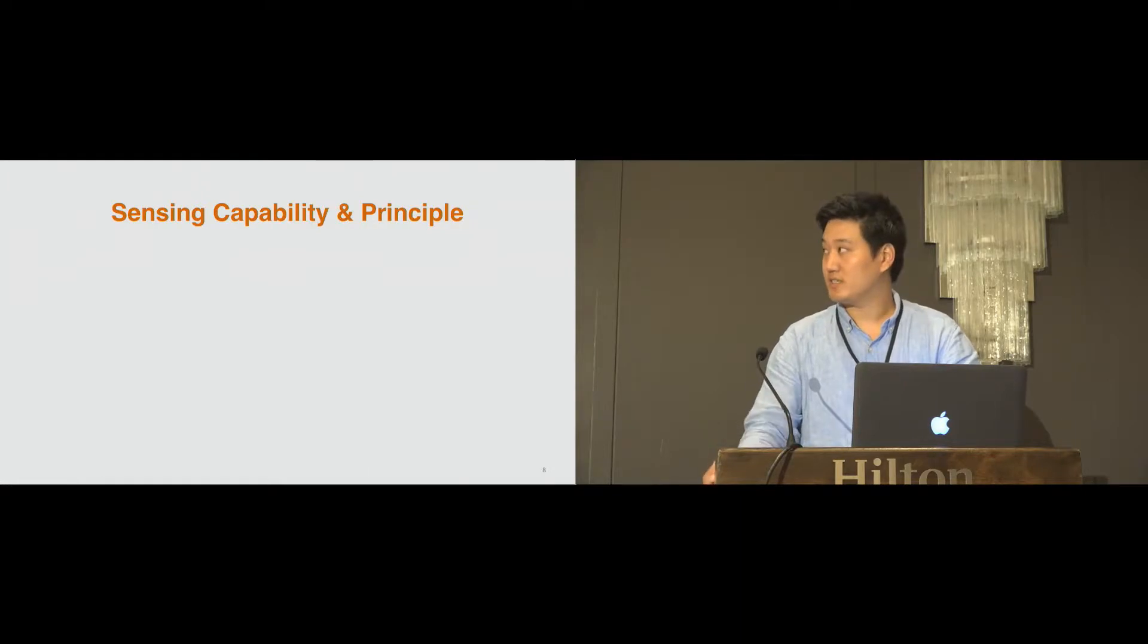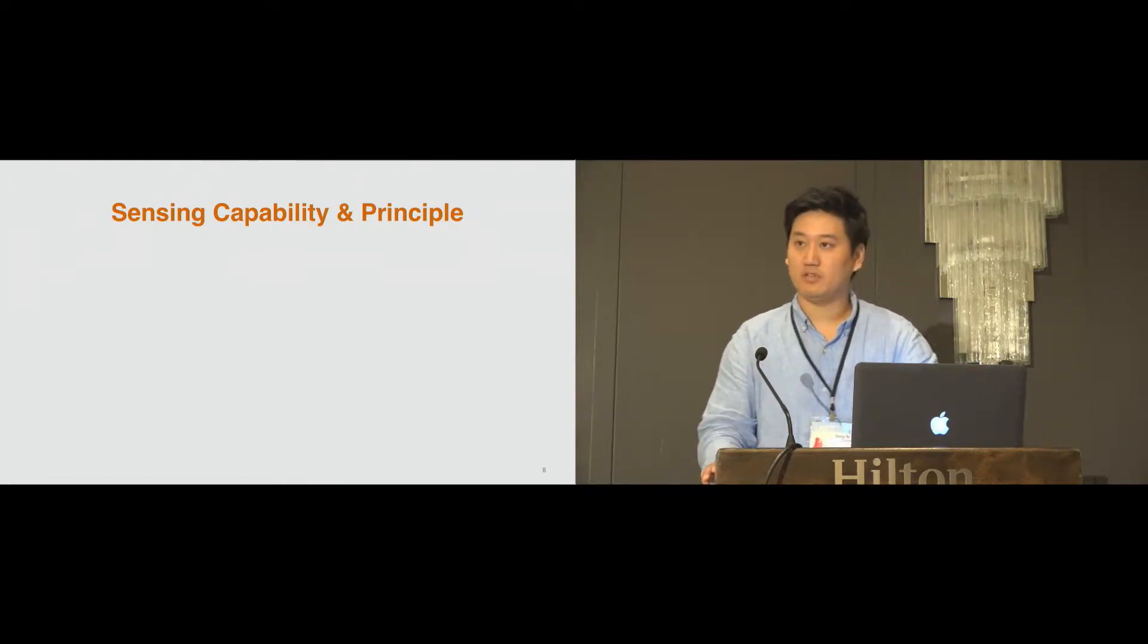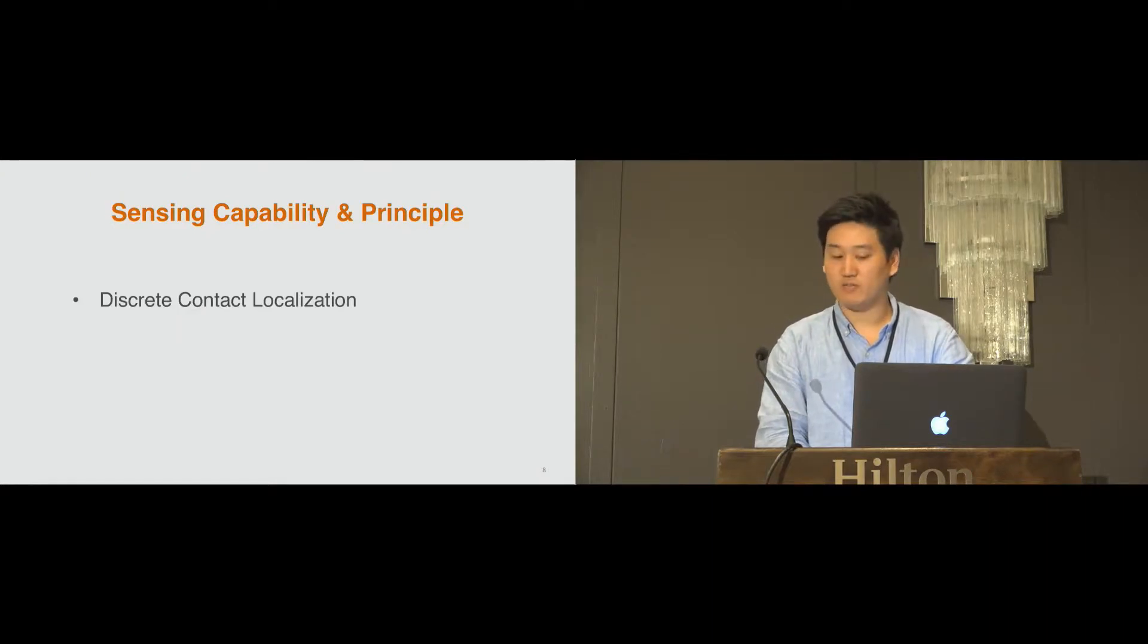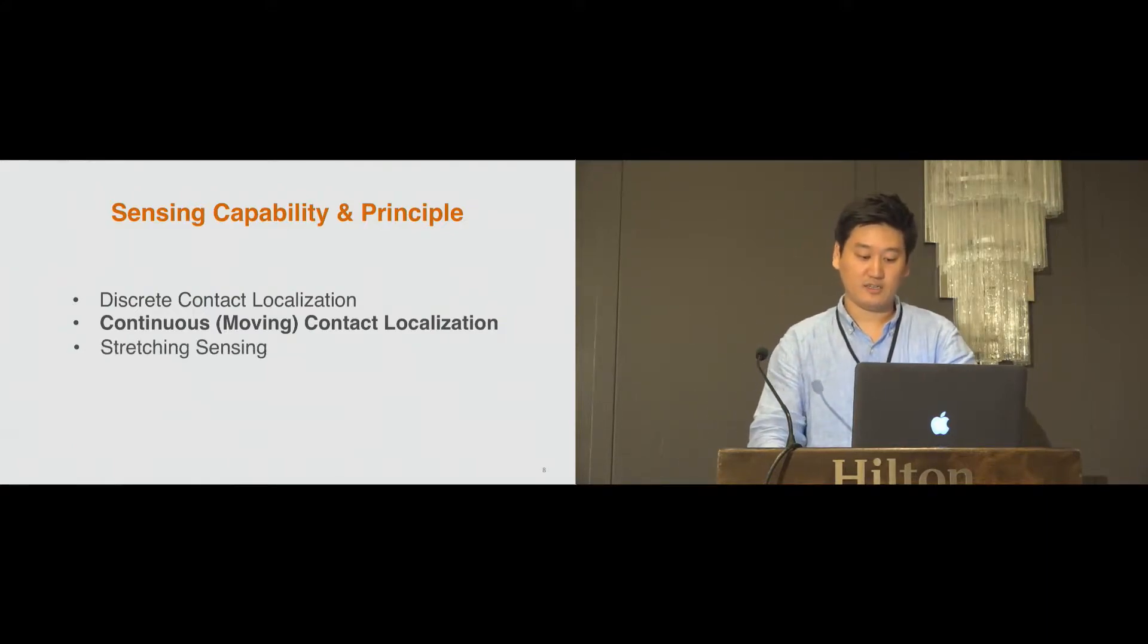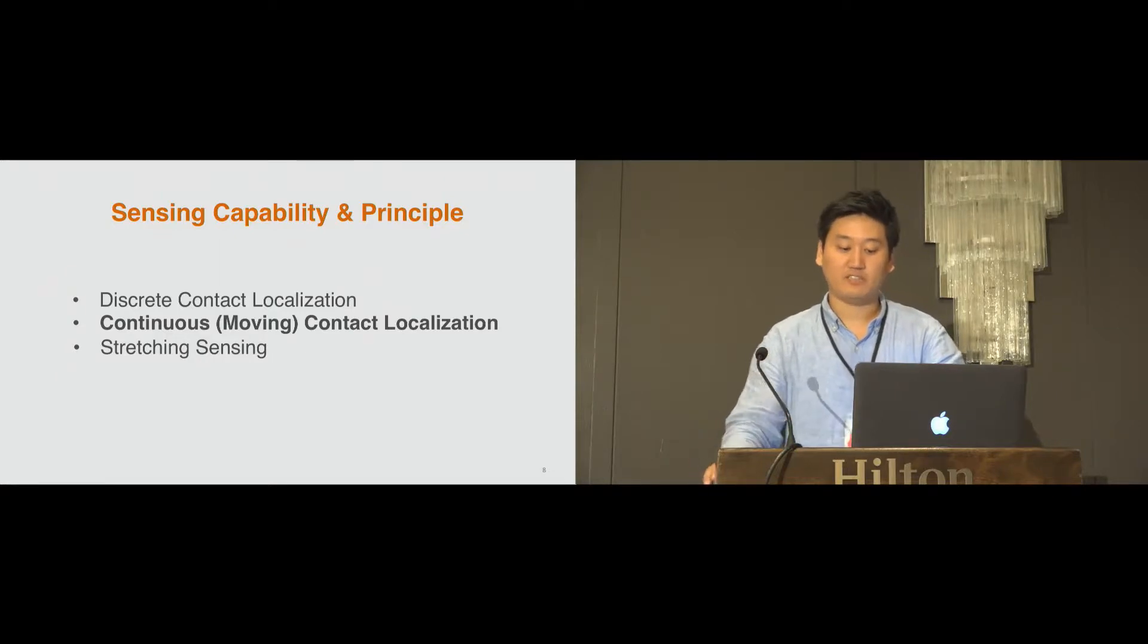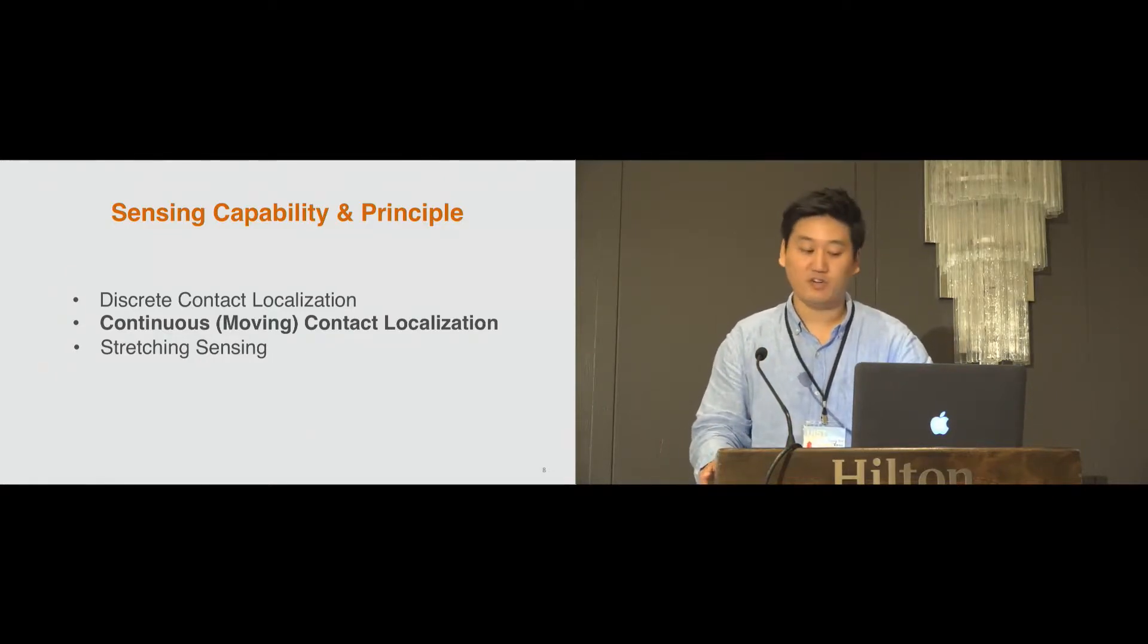So with the low-cost sensor, what kind of sensing capability are we providing? We provide discrete contact localization, which is discrete touch, continuous contact localization, which is continuous touch, and stretch sensing. We put extra effort on providing real-time sensing where all sensing introduced here can be used in real-time with real applications.